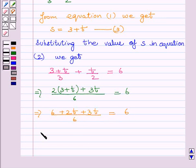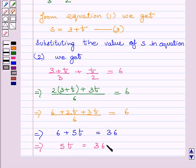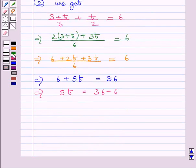Which further implies 6 plus 5t is equal to 36 or 5t is equal to 36 minus 6, which implies 5t is equal to 30 or t is equal to 30 upon 5 equal to 6.